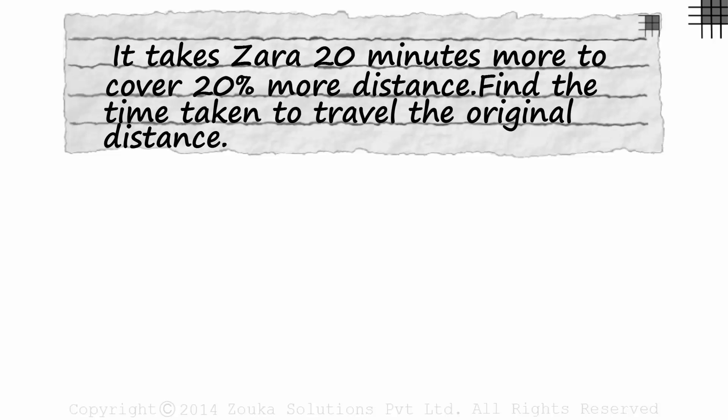Here's our first example. It takes Zara 20 minutes more to cover 20% more distance. This means that if Zara travels at her speed for 20 more minutes, she would have covered 20% more than the original distance. We need to find the time taken by Zara to travel the original distance.